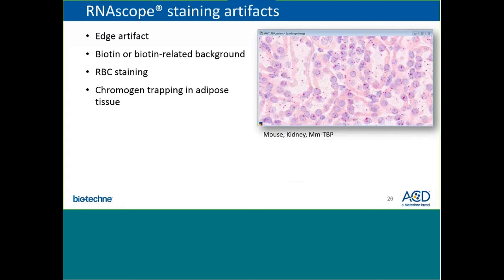An endogenous biotin background, most common in the kidney and liver, can also result in tissue with a pink haze almost reminiscent of eosin staining. This is distinct from the true signal of punctate dots seen in red. While there is not yet an official protocol to reduce this biotin background, which is quite common in kidney and liver, the ACD support group can certainly help with concerns or questions regarding this pink haze.